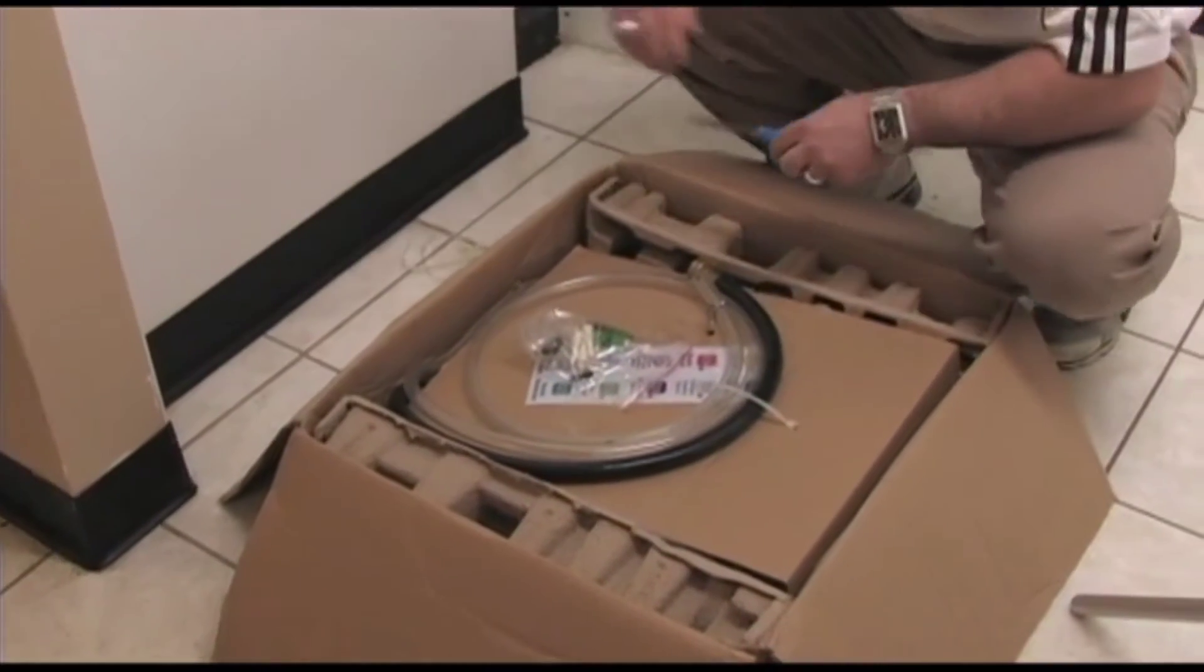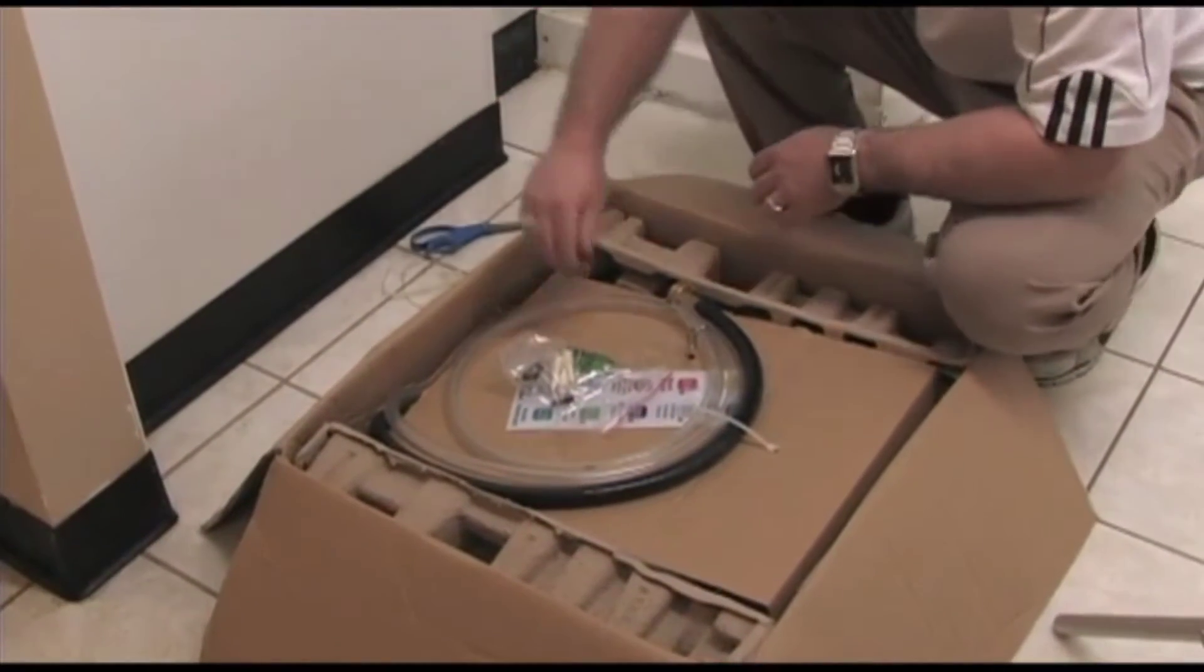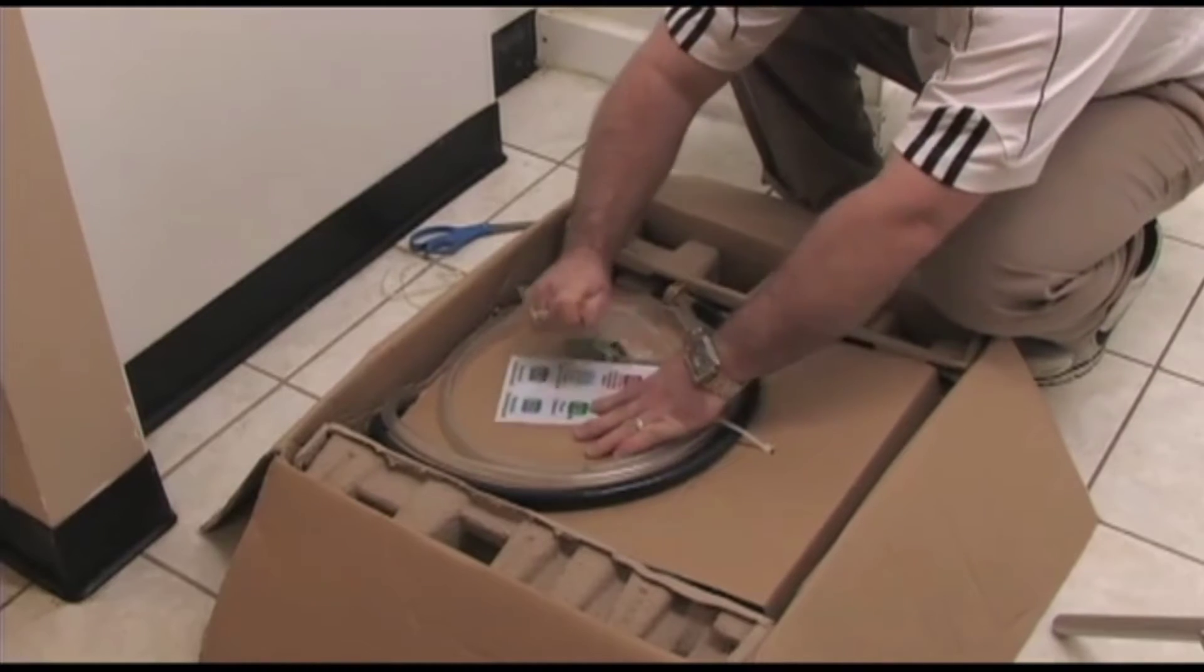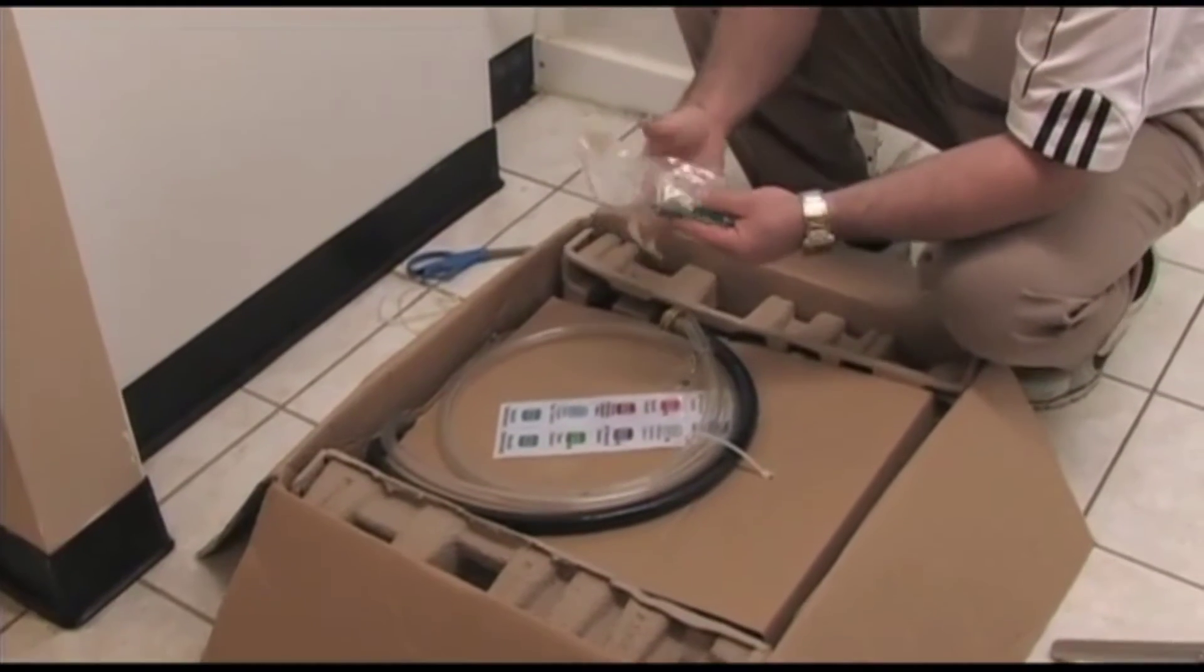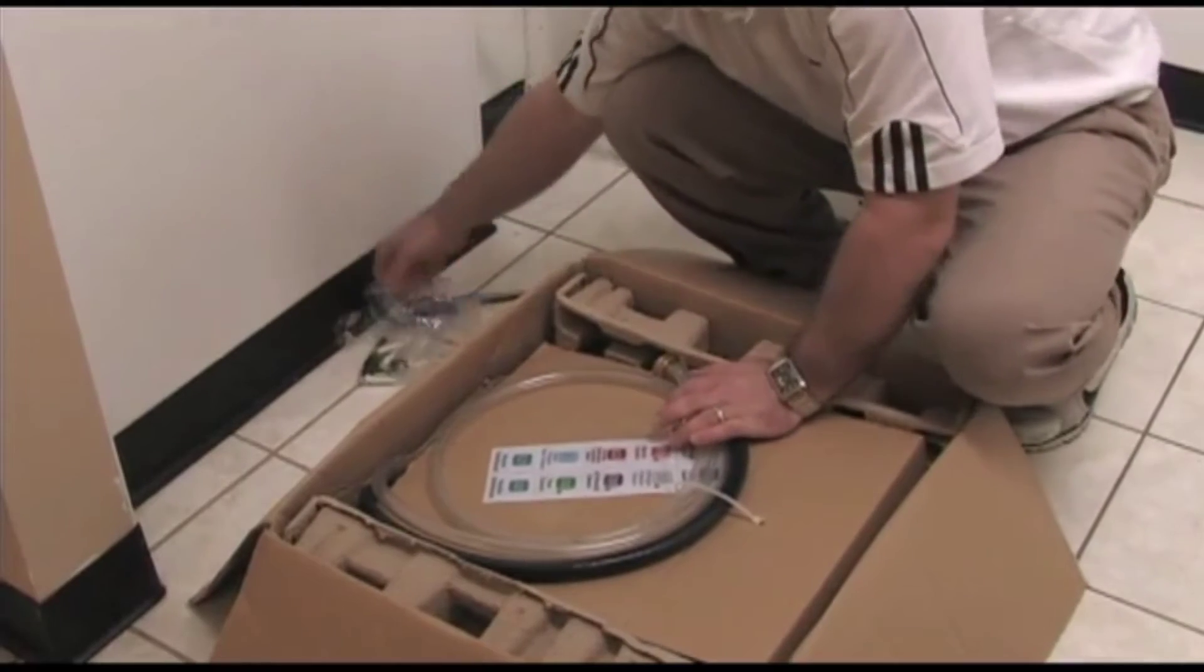Open the eco-proportioning box and ensure that all materials are available. The box should contain one eco-proportioning system, one parts bag, one instruction pamphlet, and two sheets of product decals.